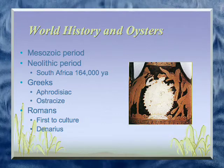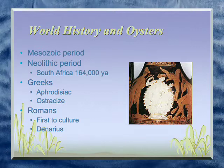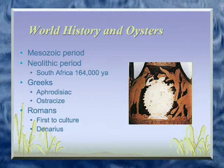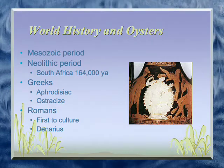Oysters have been around for a long time. We find them 200 million years ago in the fossil record. We find them in caves in South Africa along with animal bones, which shows that people were eating them 164,000 years ago. The Greeks gave us that wonderful word — aphrodisiac — which comes from the goddess Aphrodite, who rose up out of the sea on an oyster shell and gave birth to Eros, the god of love. And so oysters have been associated with love since that time.